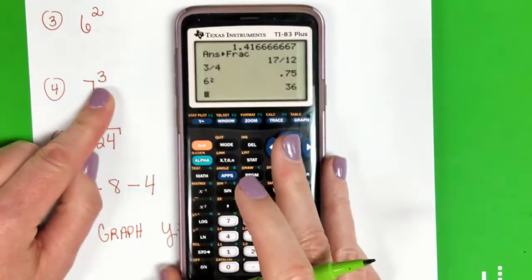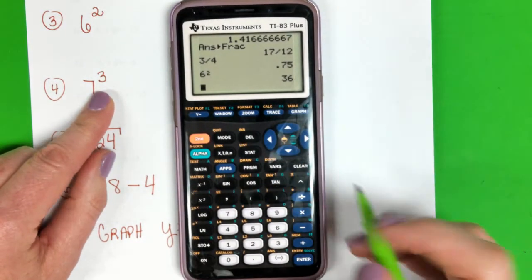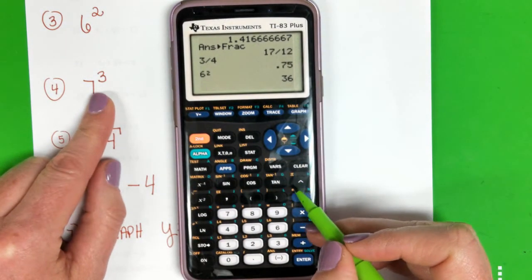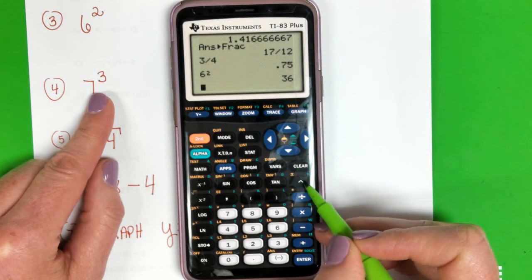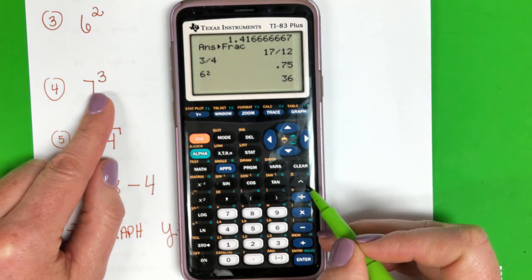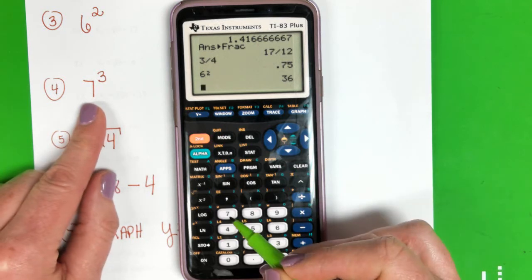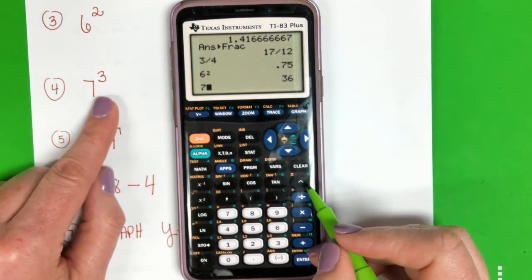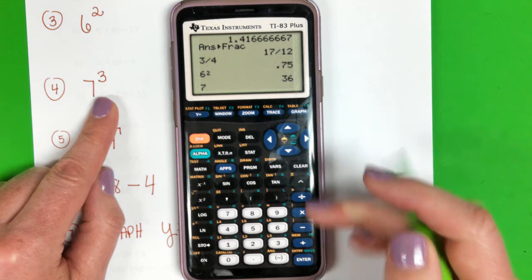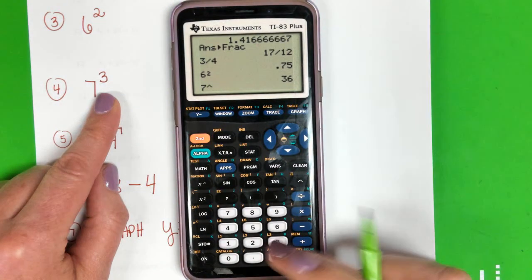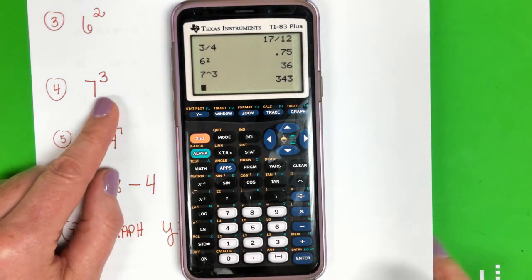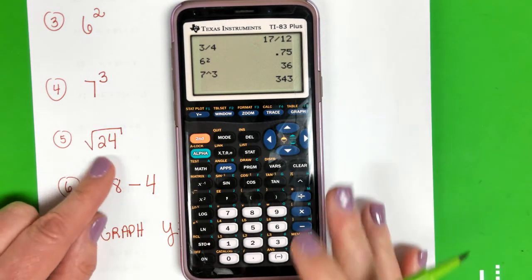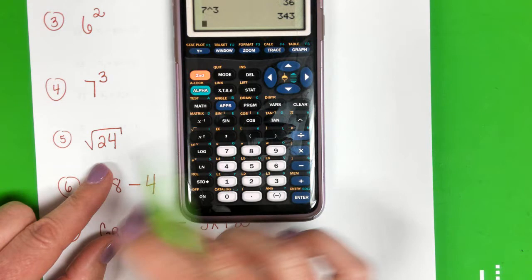But let's say we wanted to do an exponent greater than two—we have some of that in our surface area problems. So see this key that's here up above the division sign? It's a little—I call it a housetop or a carrot key. What you would do is you would type in 7, and then click the housetop key—I'm pointing to it over here on the right—and then type in 3, and you can do whatever exponent you want.